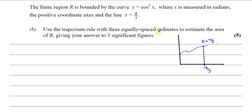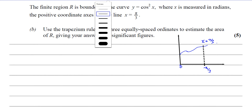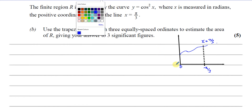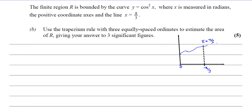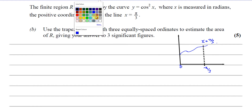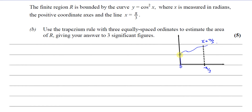It says using three equally spaced ordinates — this doesn't mean three trapeziums; it means three lines going up. We start from x equals zero because we're looking at what's enclosed between the axes. The first ordinate is at x = 0, the second is equally spaced in between, and the third is at x = pi over 3. Three ordinates make two trapeziums.